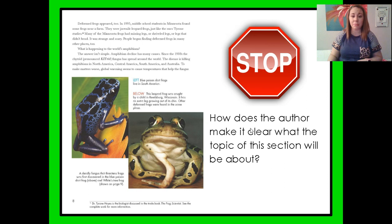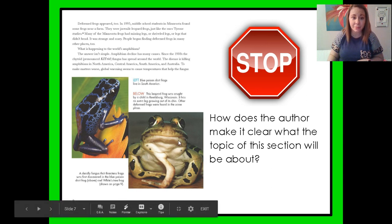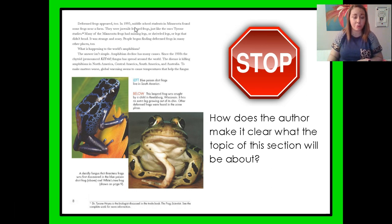Our stop and think question is: how does the author make it clear what the topic of this section will be about? Did you say it has to do with deformed frogs? Because it starts right at the top talking about "deformed frogs appeared too," and immediately they start talking all about deformed frogs. And then they have a picture of a deformed frog. So that's how the author is helping to make it clear — talking about these deformed frogs and having a picture to support that as well.